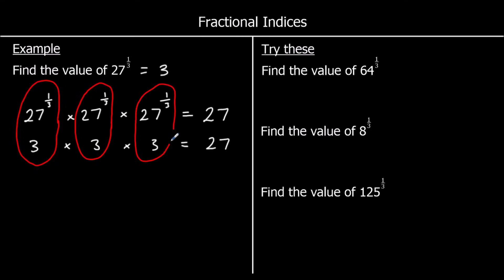So what you need to know is the power of a third means cube root. Here are three questions to try: 64 to the power of a third — cube root of 64 is 4, because 4 times 4 is 16, and 16 times 4 is 64. 8 to the power of one third is 2, because 2 times 2 makes 4, and 4 times 2 makes 8. And the cube root of 125 is 5, because 5 times 5 is 25, and 25 times 5 is 125.